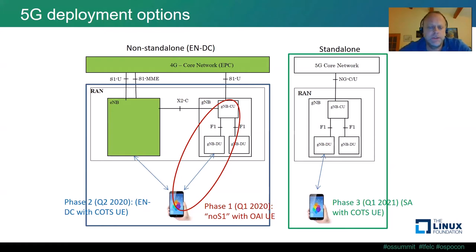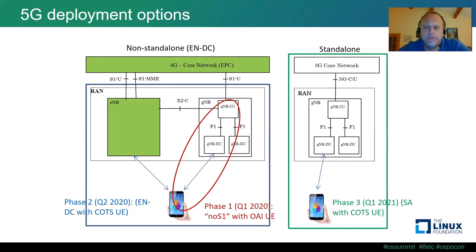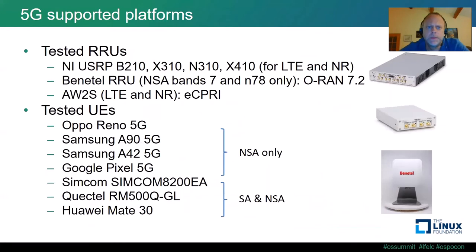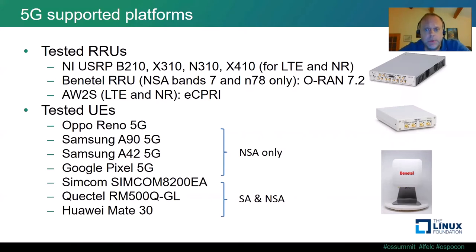In Open Air Interface today, you can deploy this hybrid or non-standalone mode of 5G. And more recently, we can deploy the full 5G solution using the 5G core network and full 5G RAN for both user plane and control plane. Open Air Interface can operate in these different modes and supports different platforms. I'm giving here a list of some of the radio units we're currently using, including national instruments USRP universal software radio peripherals. The different features of the air interface can be exploited differently on the different platforms, and these can be used for both 4G and 5G components.